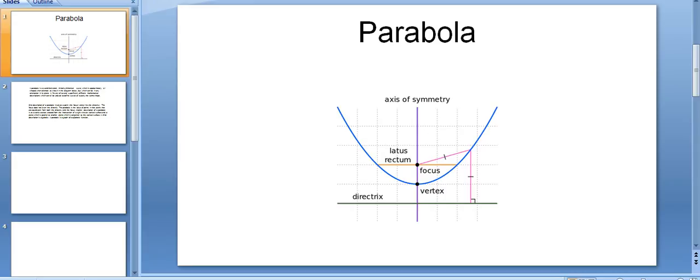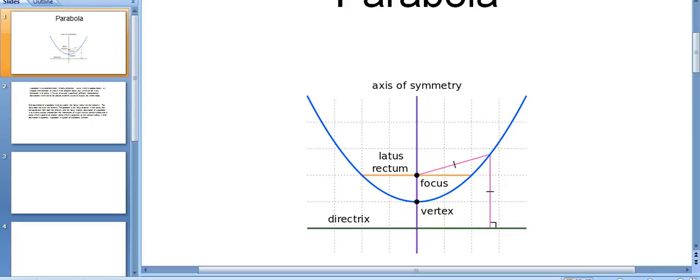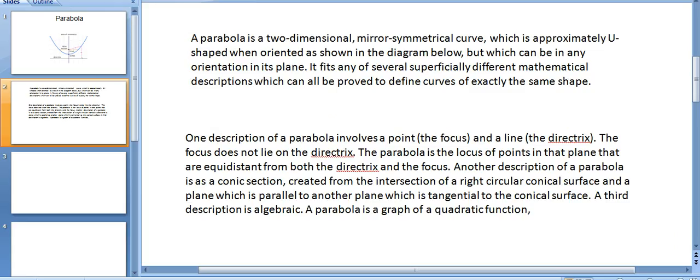Hi friends, today we have learned about parabola. This is a schematic map of parabola and we will discuss this description. A parabola is a two-dimensional mirror-symmetrical curve which is approximately U-shaped when oriented as shown in the diagram below.